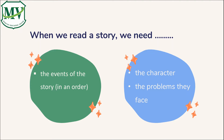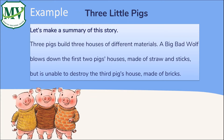When we read a story, we need the events of the story in order, the characters, and the problems they face. Let's take a look at an example of making a good summary.